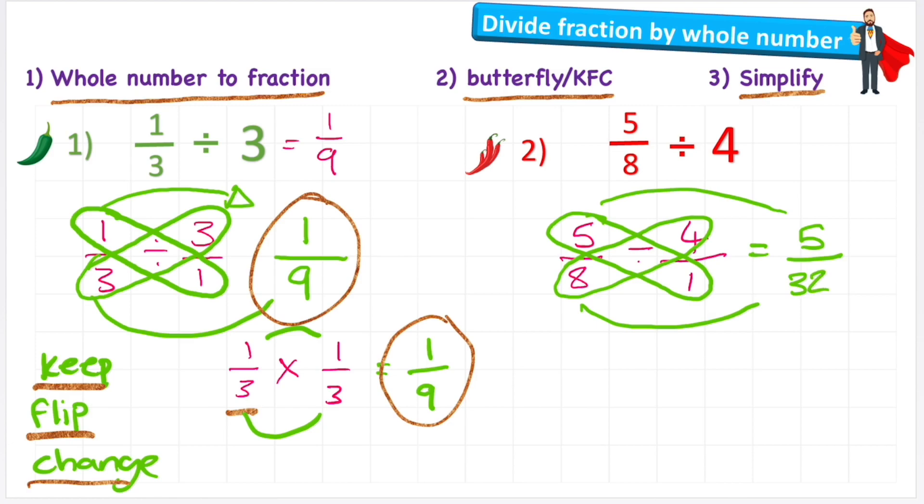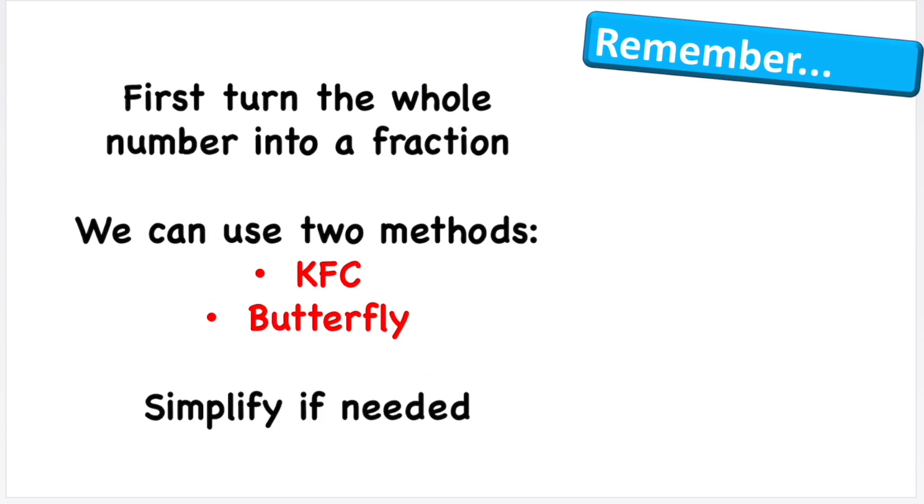Now in this question, I actually can't simplify any further because there are no common factors between five and 32. So my answer would simply be five over 32. And that's all you need to know about dividing a fraction by a whole number. Let's look at the things to remember.